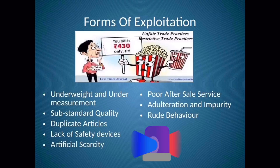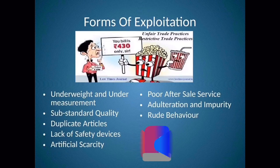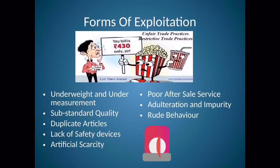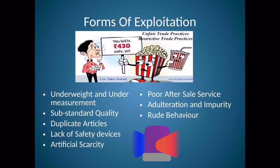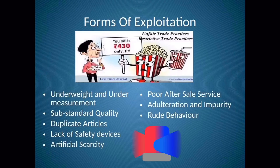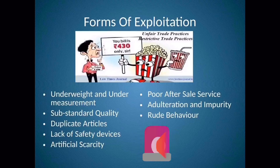Next is poor after-sales service. Once the consumer purchases a good and later has a problem, he contacts customer care or approaches the seller. But often after the product is sold, the behavior of the seller changes — they refuse to provide after-sales service or don't bother to listen to the consumer's grievance. Next is adulteration and impurity. Adulteration is a process wherein goods and services are made impure by adding harmful substances or other substances to increase quantity. Next is rude behavior. The behavior of sellers and producers in the market is not appropriate, making communication very difficult and going against market ethics.